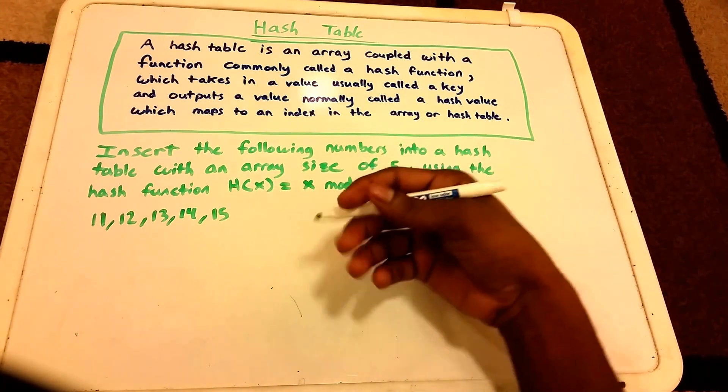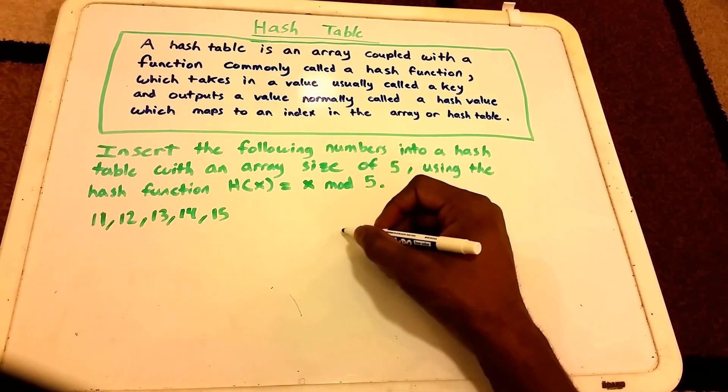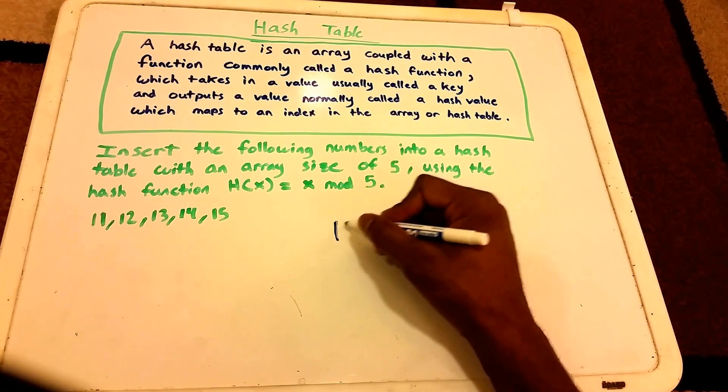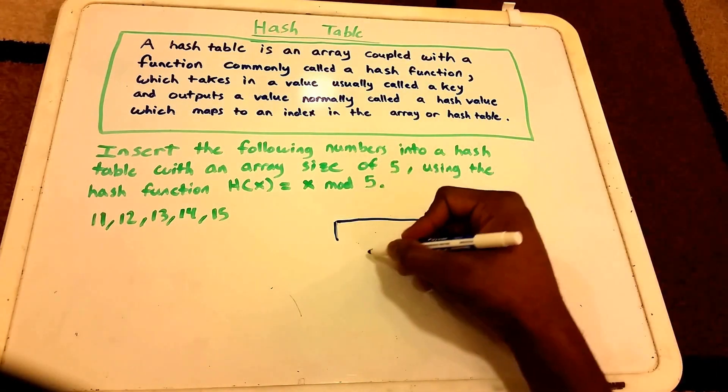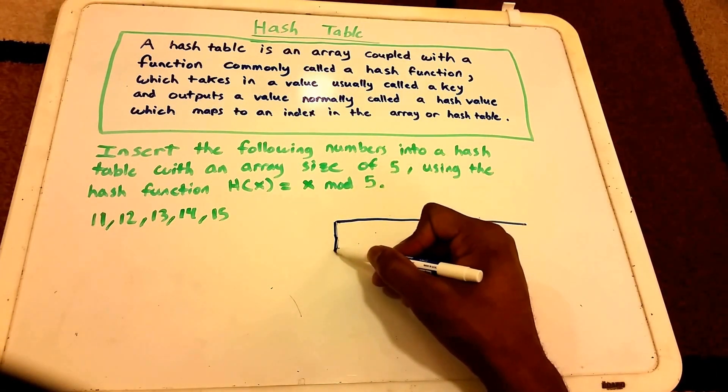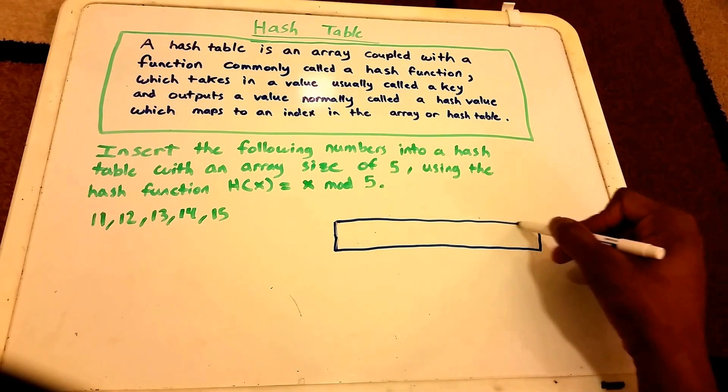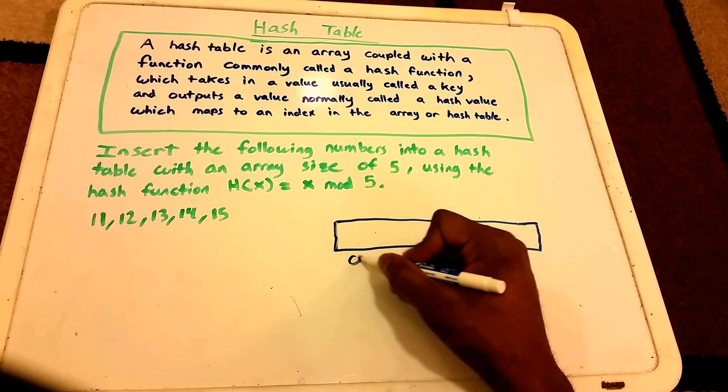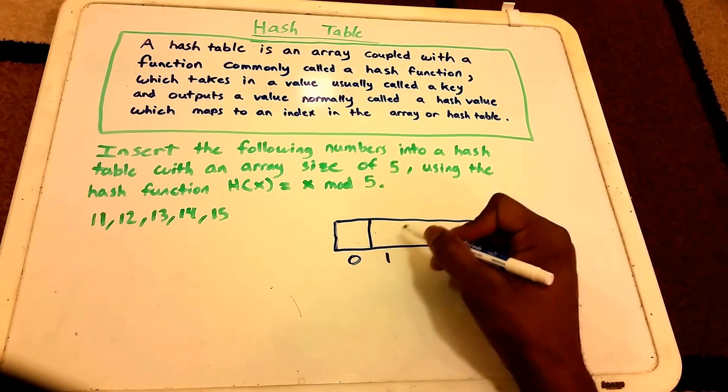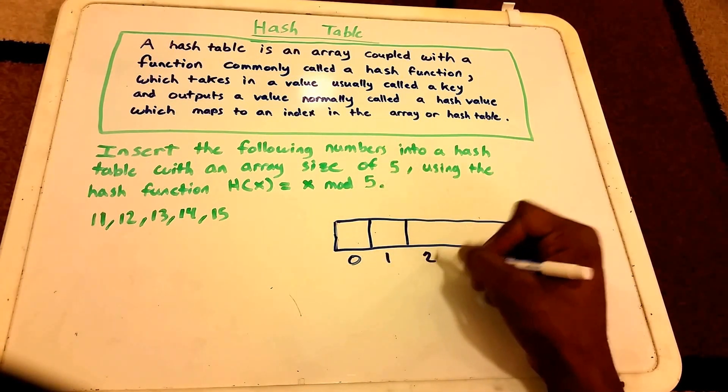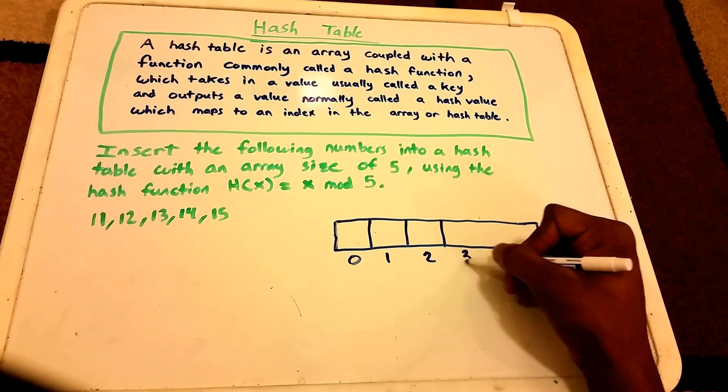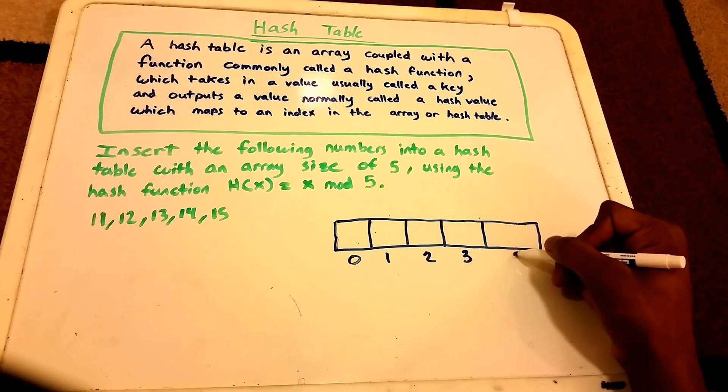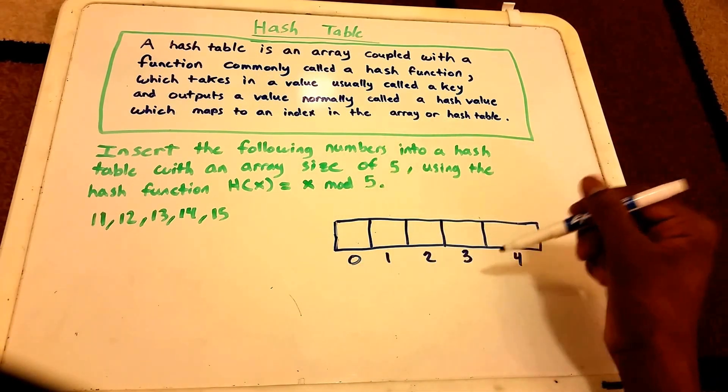I'm going to create our hash table. The hash table is just an array, and I'll draw it out like this. It's size 5, so we have index 0, index 1, index 2, index 3, and index 4. This is a hash table of size 5.